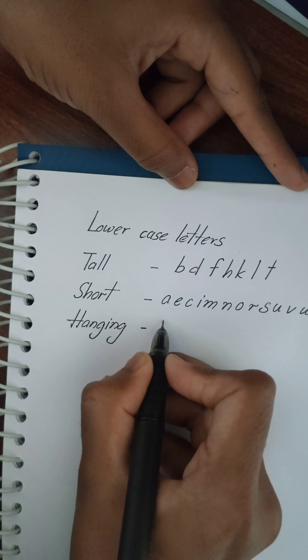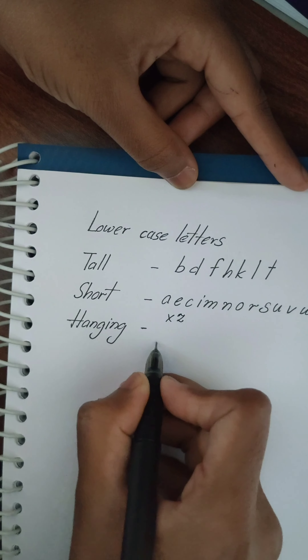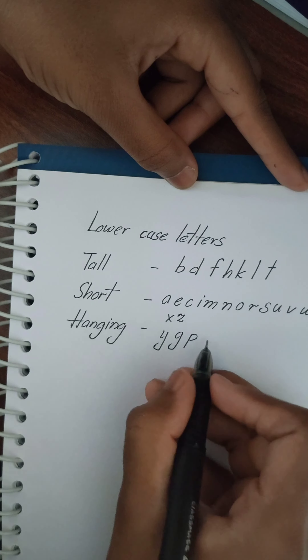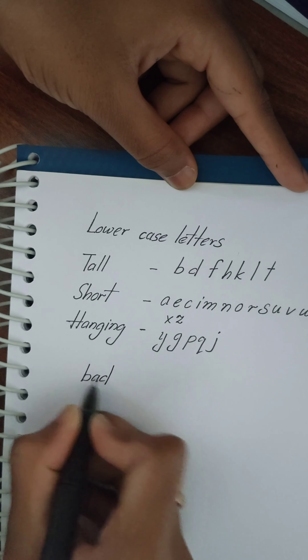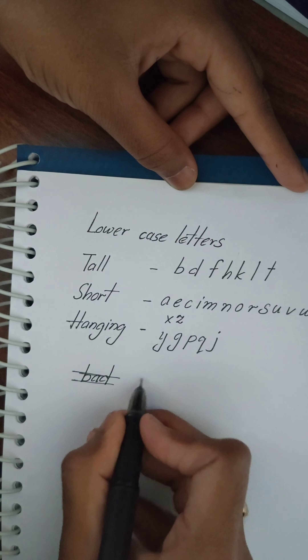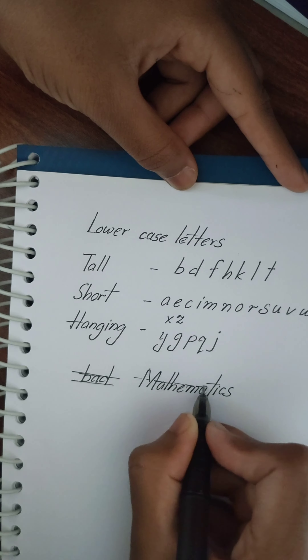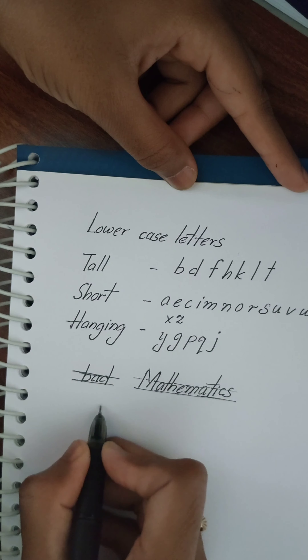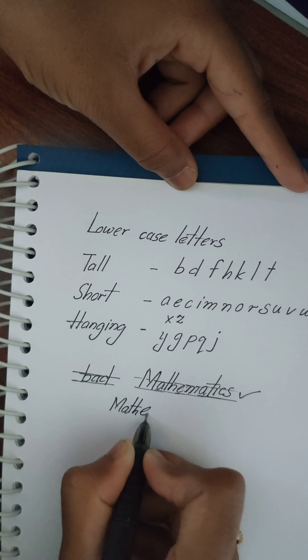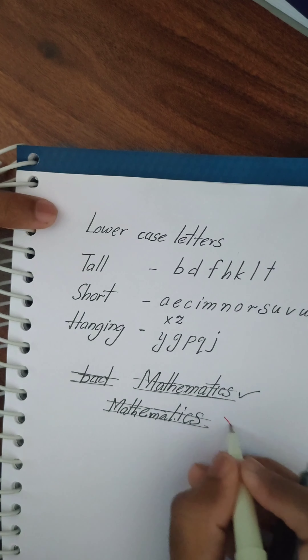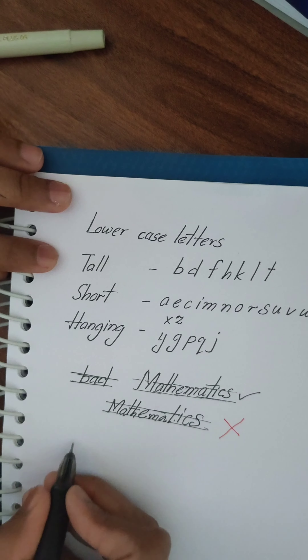You can check the picture at the bottom. You can observe how the middle portion is equal and how the ascenders are present. In this mathematics example, the first one is right and the second one is wrong.